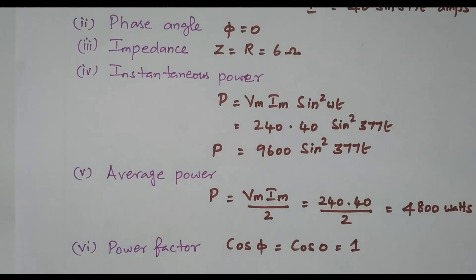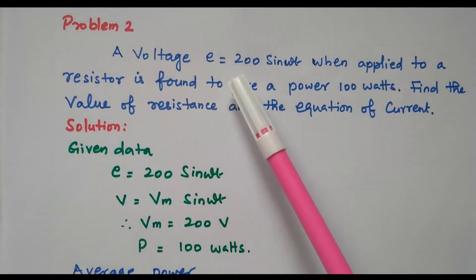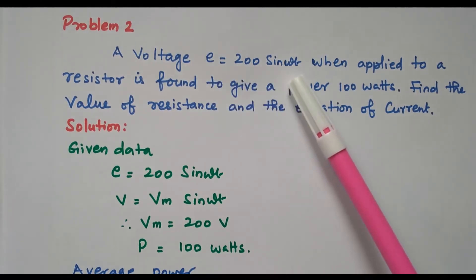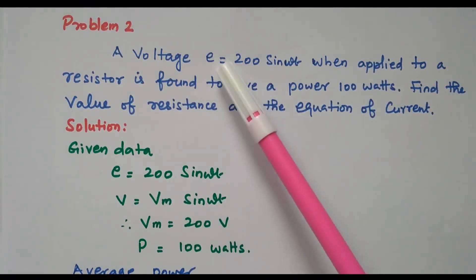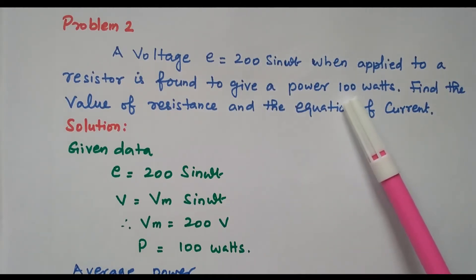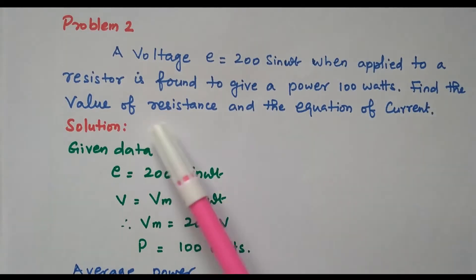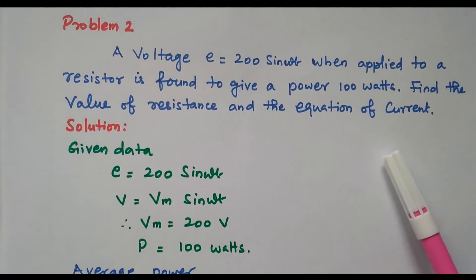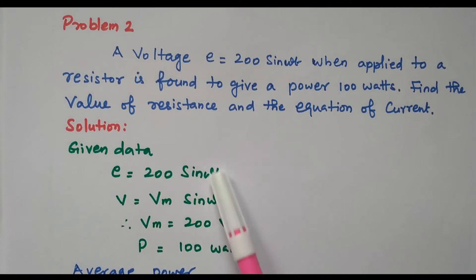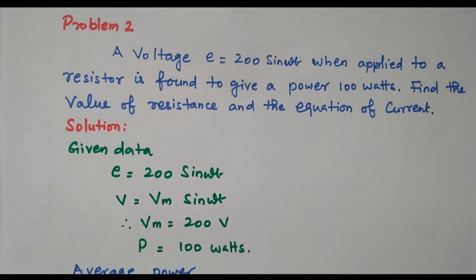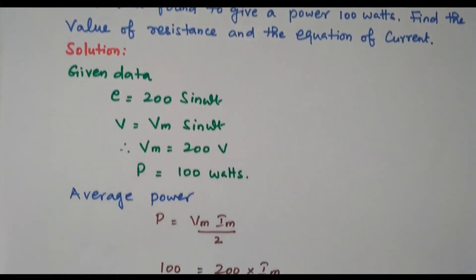Now we will go to the second problem. A voltage of E = 200 sin ωt is applied to a resistor and found to give a power of 100 watts. We need to find the value of resistance and the equation of current. From the given data, comparing with the standard form V = Vm sin ωt, we get Vm = 200 volts, and the power is 100 watts.